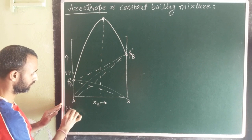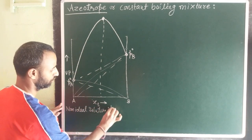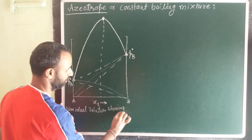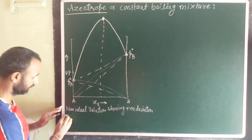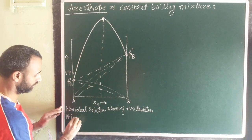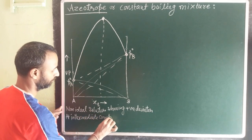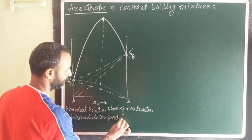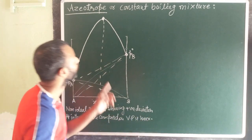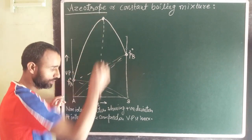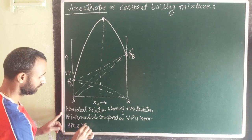This is a non-ideal solution showing positive deviation. At intermediate composition, vapor pressure is maximum. Now, when vapor pressure is maximum at this point, the boiling point is minimum.